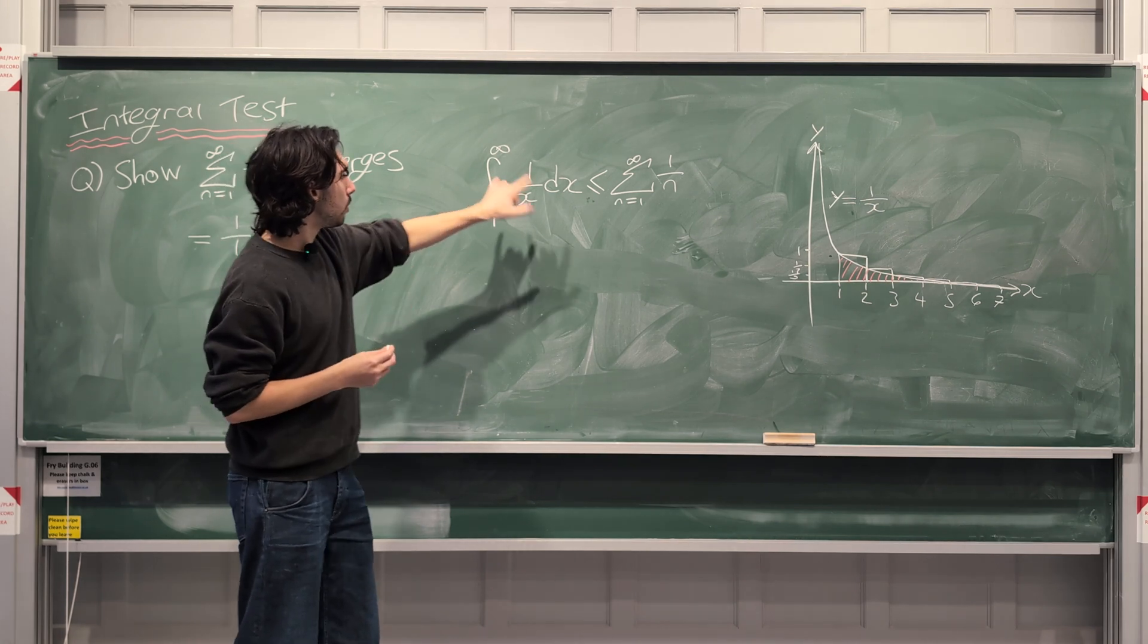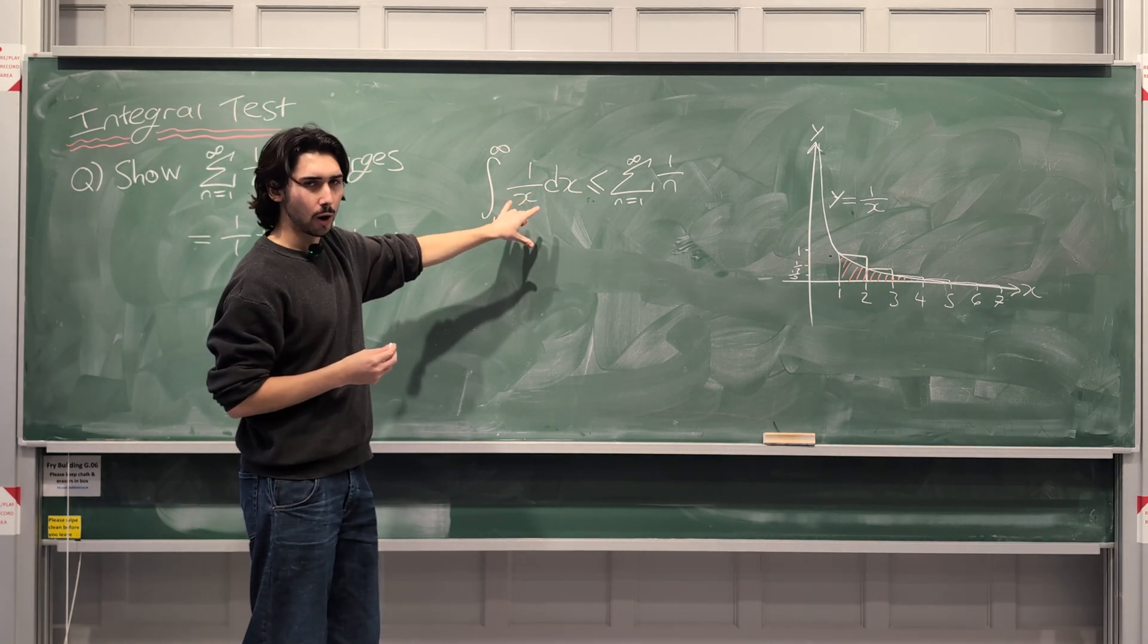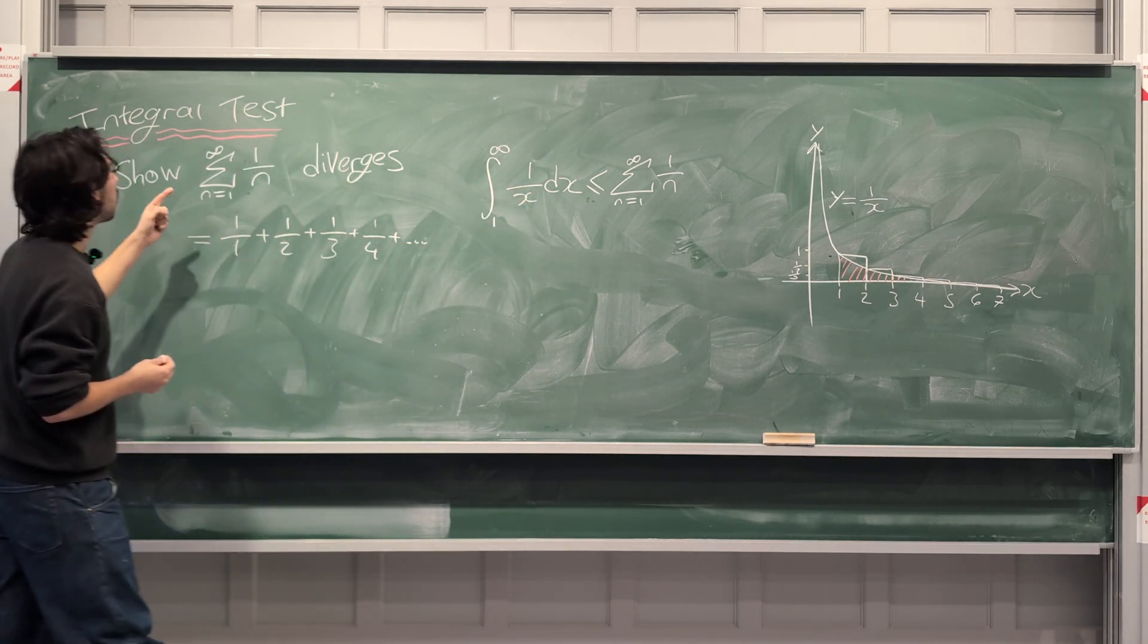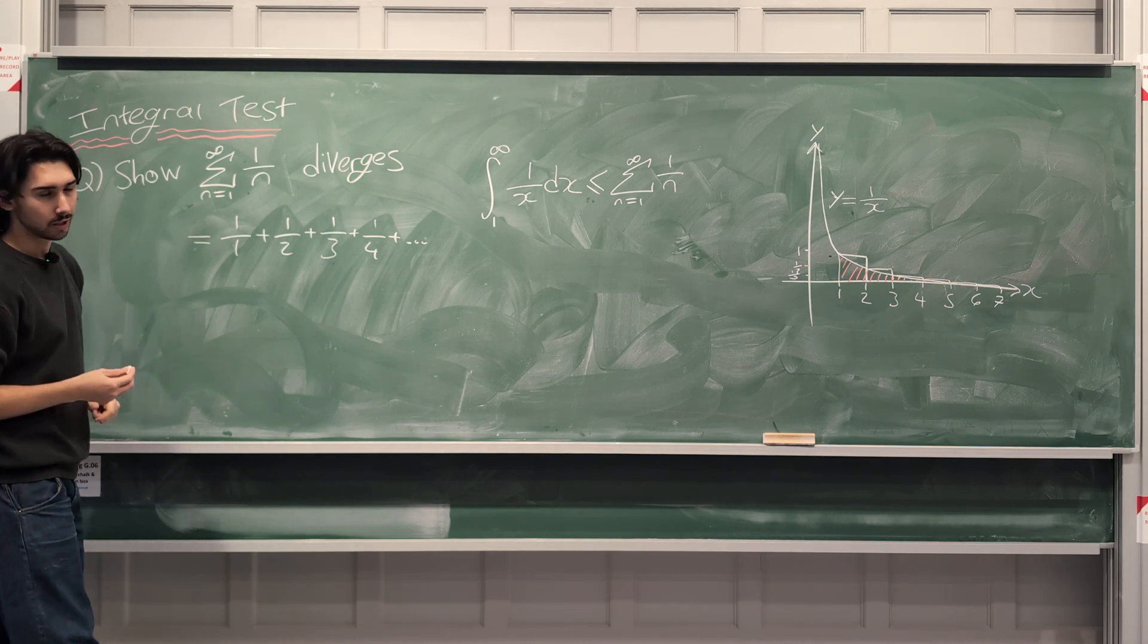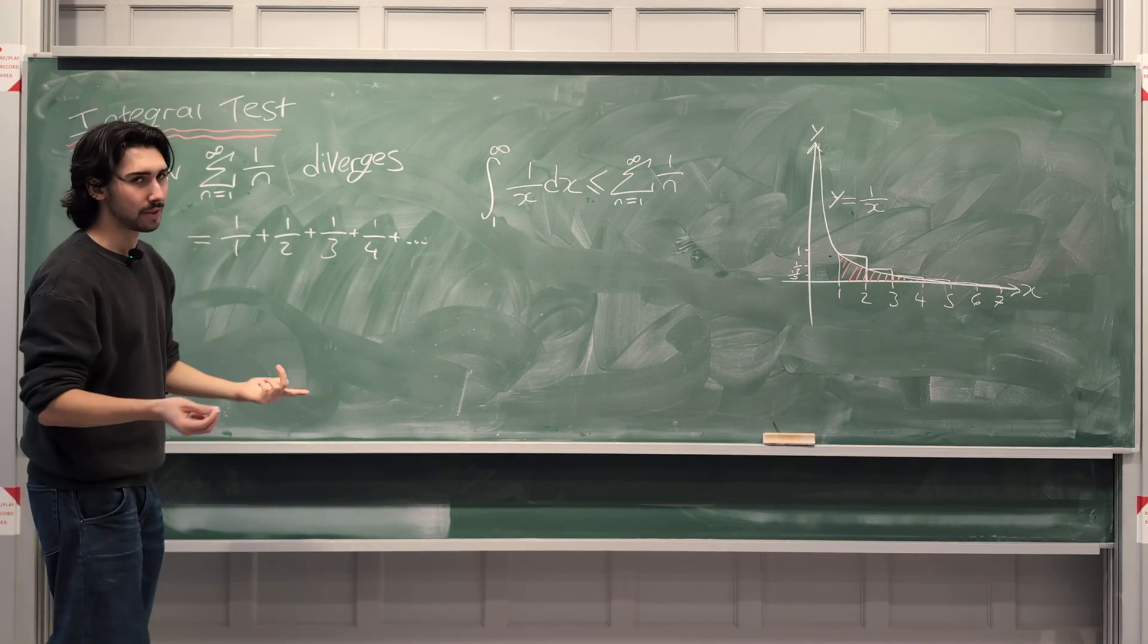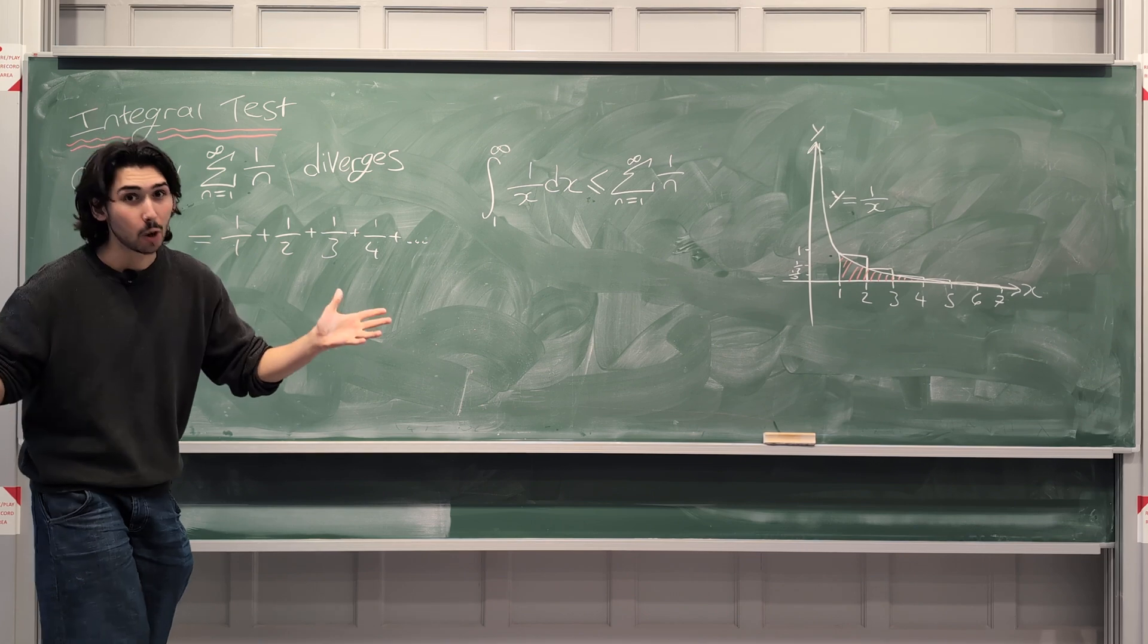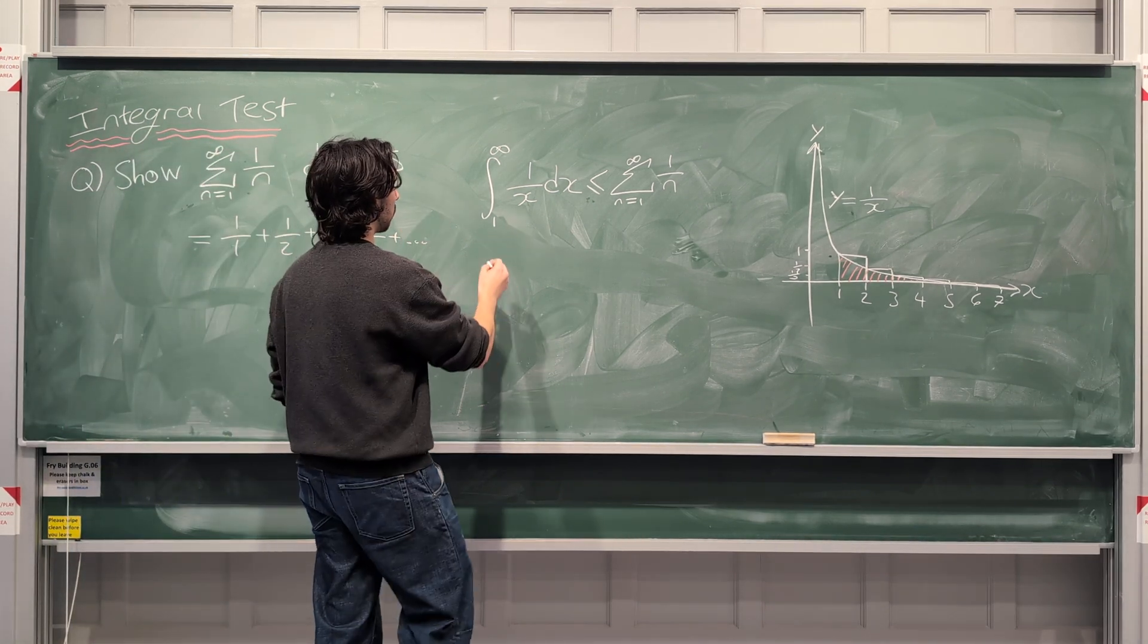So if we can show that this integral diverges, then it means that this sum diverges because the sum is bigger than the integral. That's the idea. That's it. That's all it is. So we just do the integral.